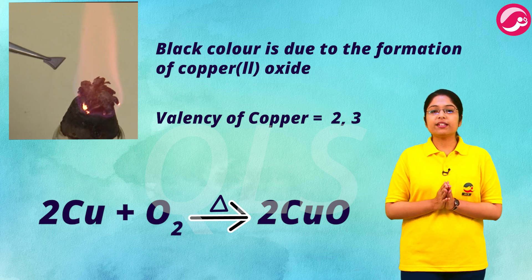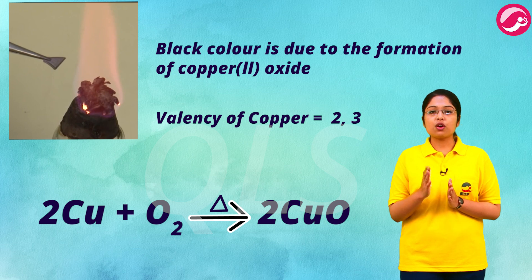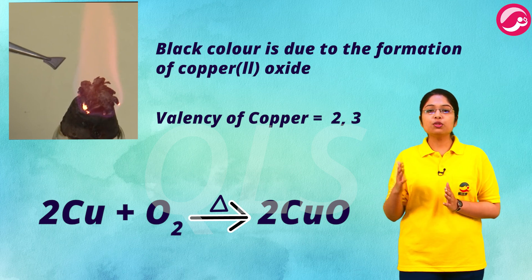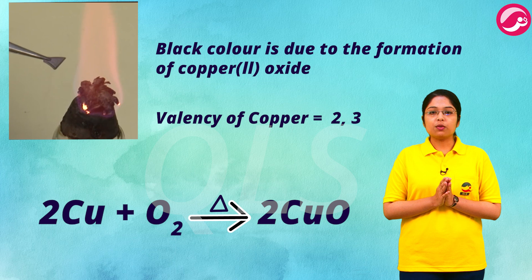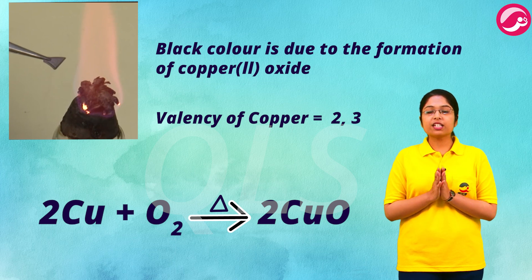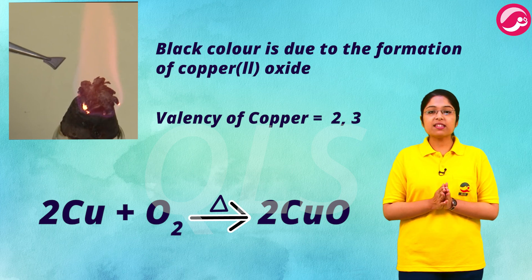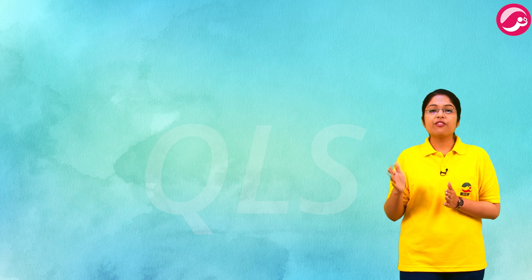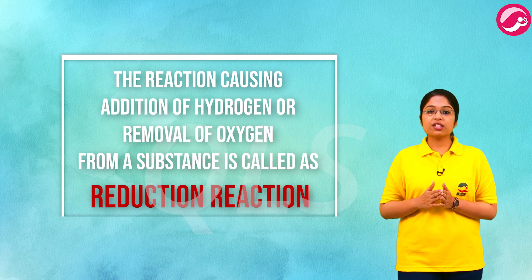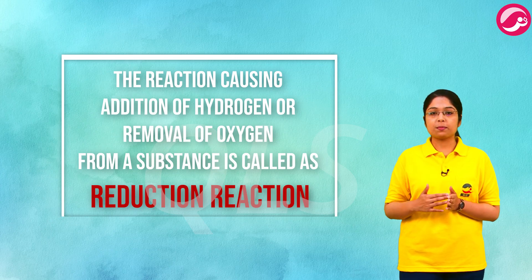Metals usually have more than one valence — copper's valence is 2 or 3. So when copper is heated in the presence of oxygen it forms copper(II) oxide. When this oxidized copper powder is exposed to hydrogen gas, it converts back to brown. The exposure of black copper powder to hydrogen gas reverses the oxidation reaction — the reverse of oxidation is reduction.